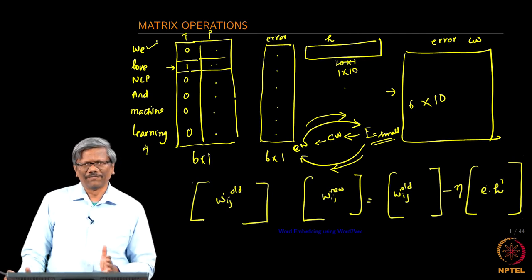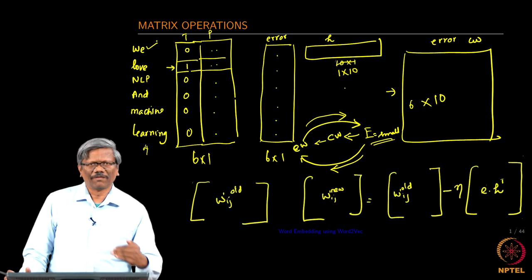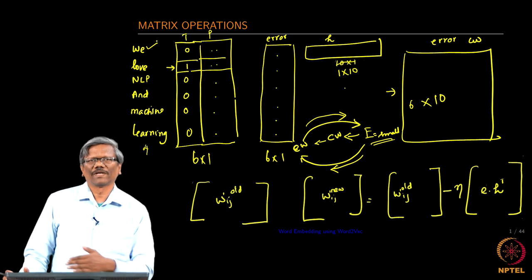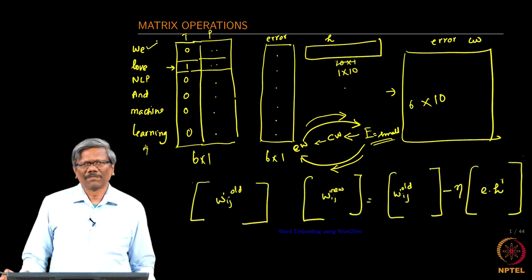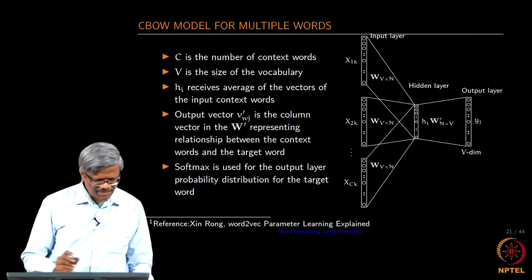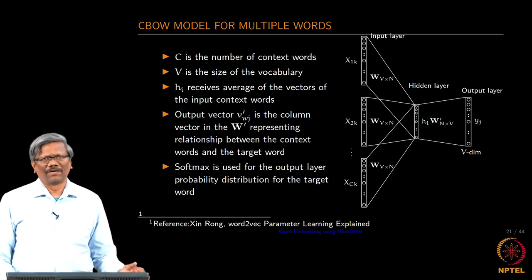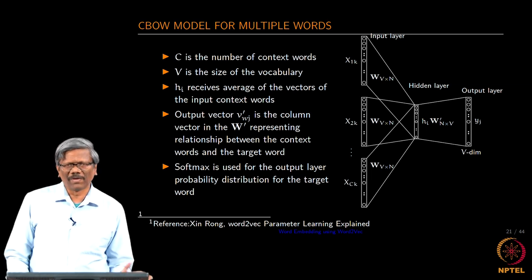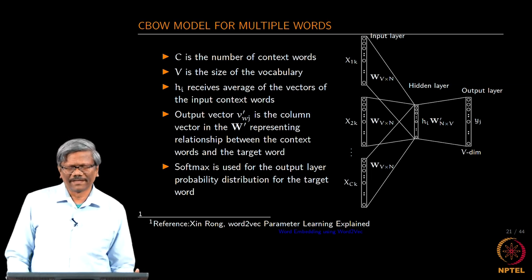The embedding layer will give you actually the index of the word that we want to really find. Supposing we want to find the word vector for law, it is nothing but the index of that row in the embedding matrix. Now, let us take the same thing and extend it to the multiple context word right. When you have multiple words, how do you really take this forward?